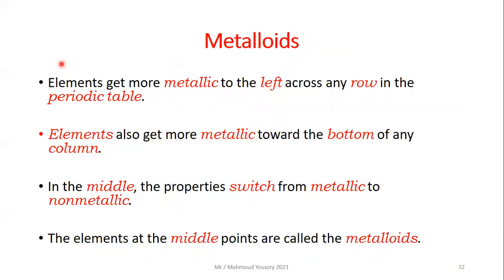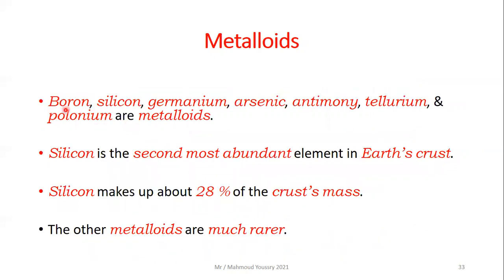Elements become more metallic toward the left across any row in the periodic table, and also more metallic toward the bottom of any column. In the middle, properties switch from metallic to non-metallic — the elements at these middle points are called metalloids. Metalloids include boron, silicon, germanium, arsenic, antimony, tellurium, and polonium. Silicon is the second most abundant element in Earth's crust, making up about 28% of the crust's mass, while other metalloids are much rarer.